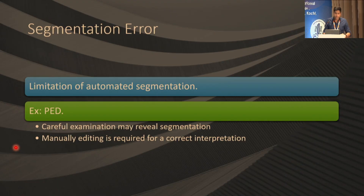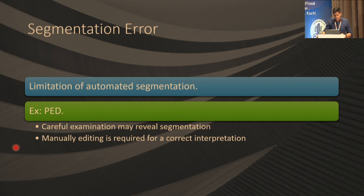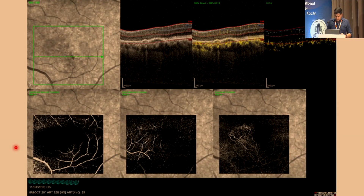Segmentation error can occur — sometimes you don't see a beautiful network as expected. This is a limitation of segmentation. The machine does a very good job most of the time, but there can be limitations. For example, in PD cases, careful manual examination with layer-by-layer segmentation can reveal a bigger network than what the machine provides on its own.